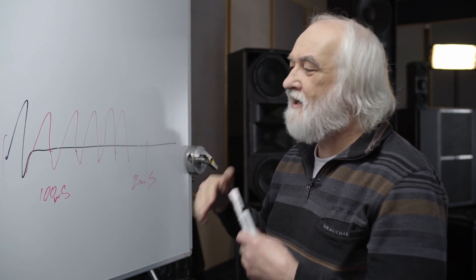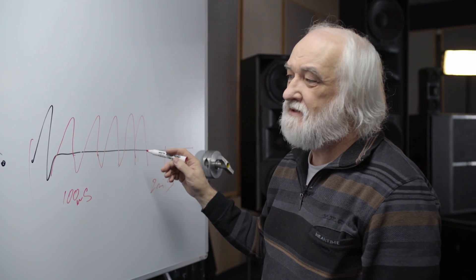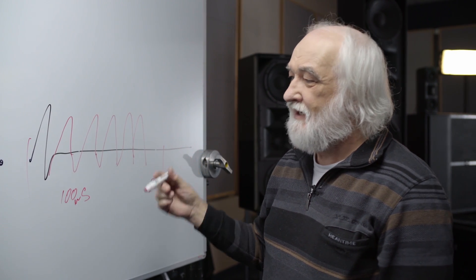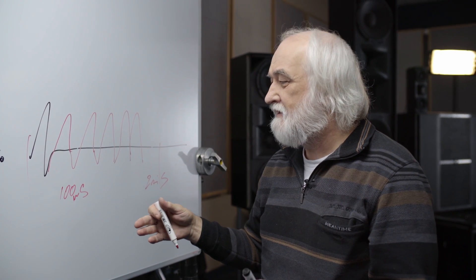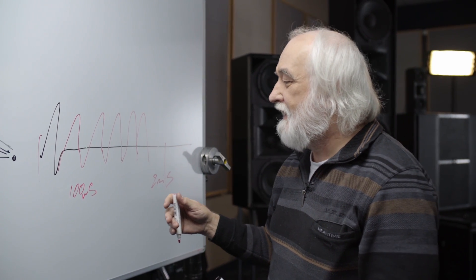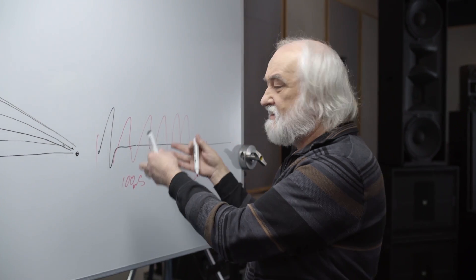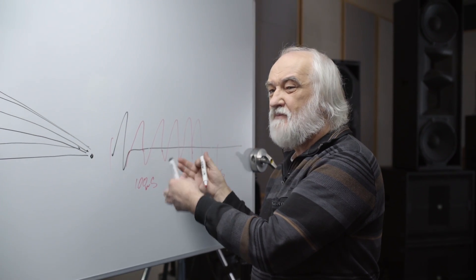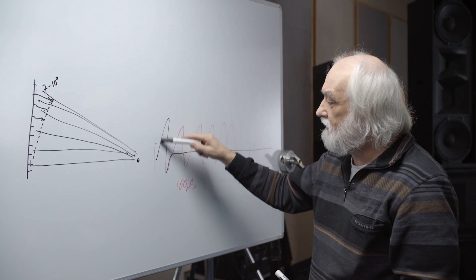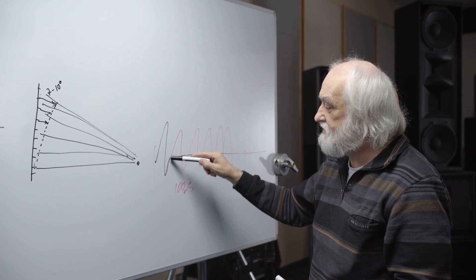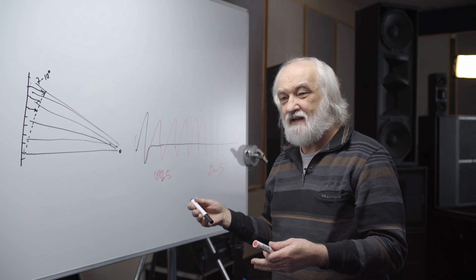Another problem is that because the signal lasts longer, to create feedback you need the time to develop it. In this case, the line array is more sensitive to feedback. If you have a point source, the advantage is it stops immediately — it's way more resistive to feedback.